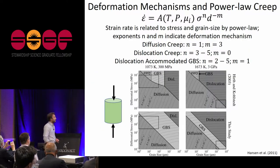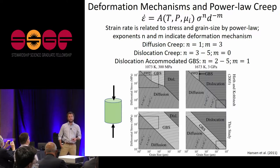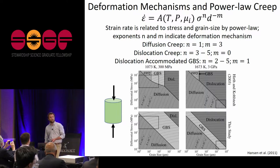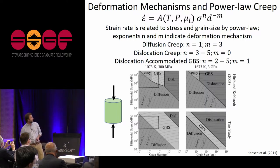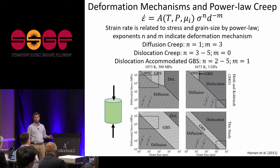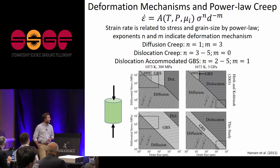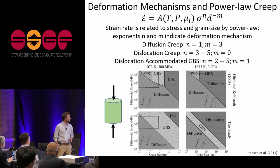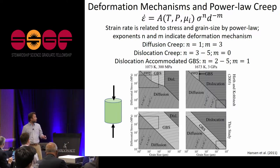That has motivated a large body of experimental work where people have taken olivine ceramics, deformed them in axial compression to low strains like 10 percent, and tried to understand the deformation mechanisms that lead to flow in the Earth. What people found is that olivine flows at high temperatures and pressures by power law creep, where strain rate is related to stress to the nth power and grain size to the minus nth power.